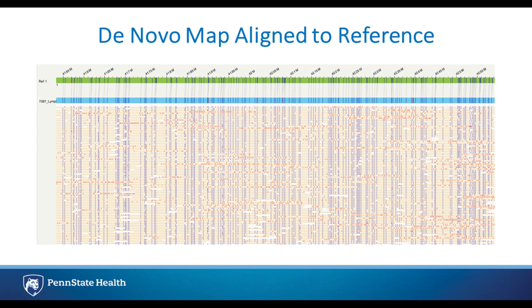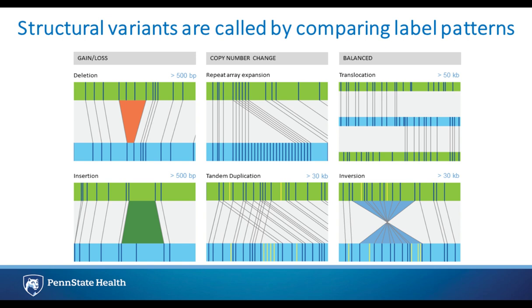The cancer sample is shown in blue, with the banding pattern visible. The reference — typically HG38 — is shown in green with its own banding pattern. Any differences detected are used to identify structural variants. At the bottom in orange are examples of digital molecules spanning the region. For example, a deletion shows banding on the green human reference but a missing region in the blue cancer sample. An insertion shows an additional band and additional DNA compared to reference. For translocations, the top green refers to one chromosome and the bottom green to a different chromosome.